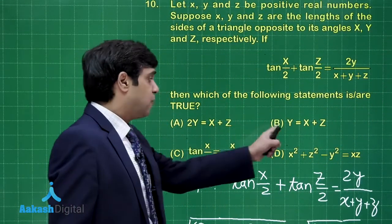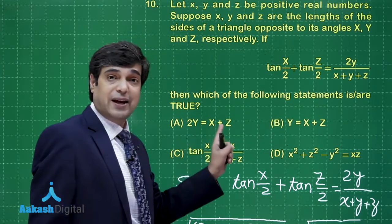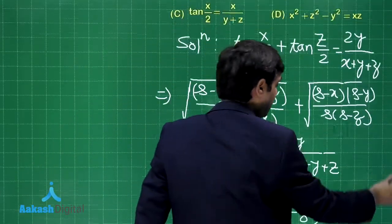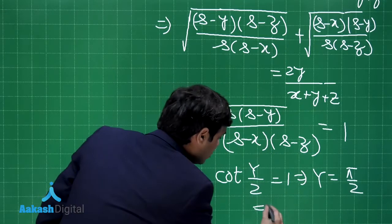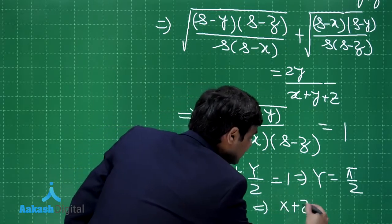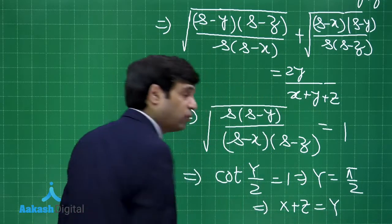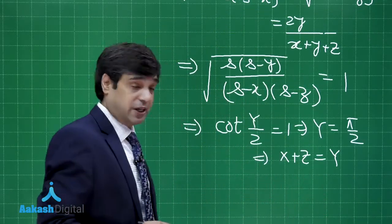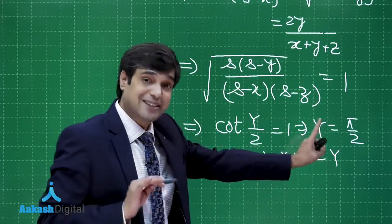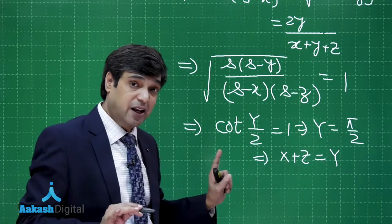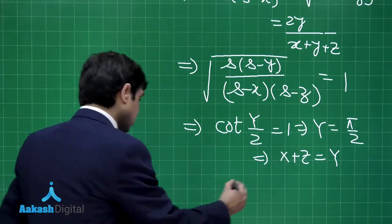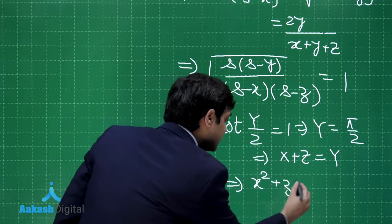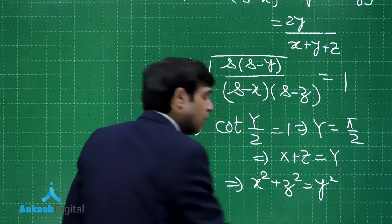So we get angle Y = π/2. The options involve relations like y = x+z or 2y = x+z. Since Y = π/2, we have X + Z = π/2 as well, so X + Z = Y, meaning option involving y = x+z is correct. Also, since the angle opposite to side y is 90 degrees, we can conclude x² + z² = y².